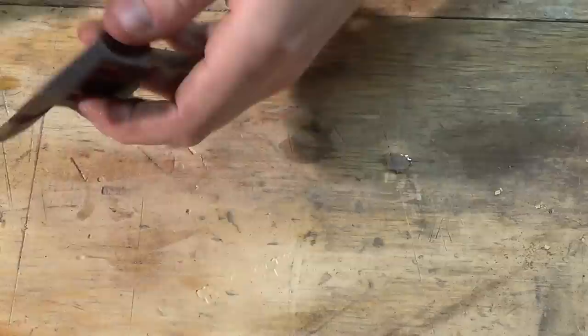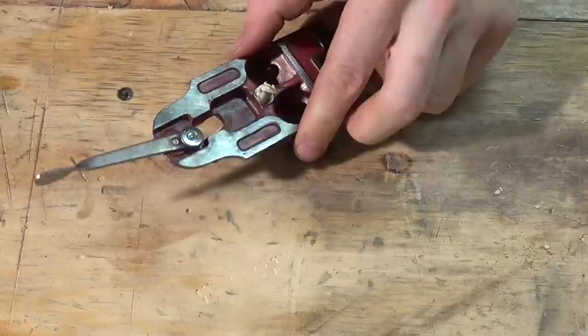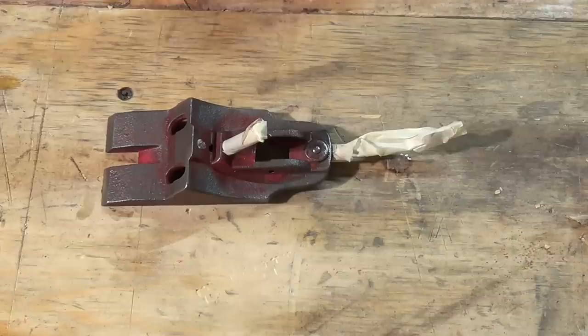So now with everything removed from the frog that I could remove, I did take it to the wire wheel and cleaned up all the exposed paint that I could. And so I'm taping off all the spots that I want to remain unpainted. I noticed that a lot of times it's nice to have a good sharp knife to be able to more precisely lay the tape down and then get a better finish.